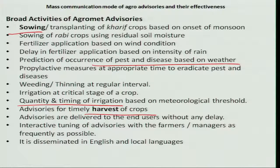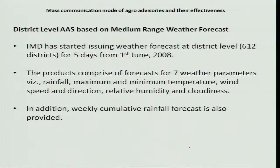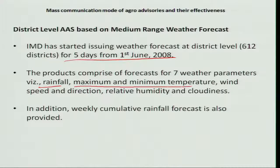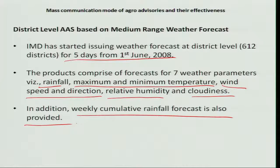Advisories are delivered to end users without any delay, and interactive tuning of advisories with farmers and managers is done as frequently as possible through communication. They are disseminated in English as well as all regional languages. The district-level AAS is based on medium range weather forecast. IMD has started issuing weather forecasts at the district level for 612 districts for 5 days from 1st June 2008 onwards. The products comprise forecasts for 7 weather parameters: rainfall, maximum and minimum temperature, wind speed and wind direction, relative humidity, and cloudiness. In addition, weekly cumulative rainfall forecast is also provided through district-level AAS.